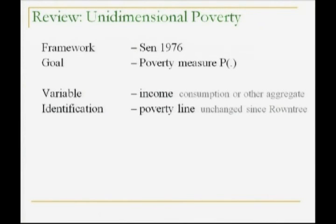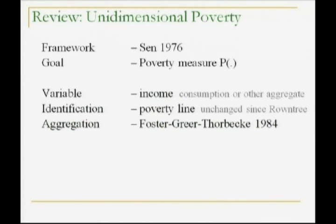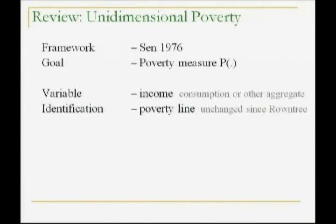Variable identification is done through a poverty line, and this has been unchanged for hundreds of years. By the way, there is discussion as to why it should be a poverty line, or if there should be a poverty line at all. Angus Eaton was one who proposed that maybe we shouldn't have a poverty line. It seems like an artificial way of deciding who's poor. Maybe we should have fuzzy things, or maybe we shouldn't have anything.